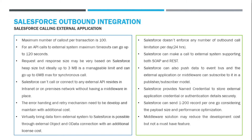If you are making a callout from synchronous Apex, your heap size is 6 MB, whereas if you are doing API callouts from an asynchronous process like Batch or a Future method, your heap size is 12 MB. Ideally, half of your heap size — so 3 MB or 6 MB respectively — is a good amount to consider for your payload. Salesforce can make external calls using both SOAP and REST.